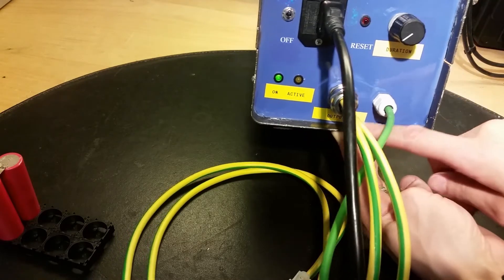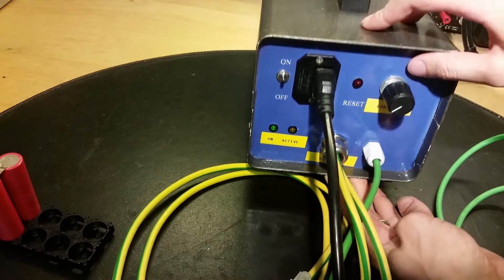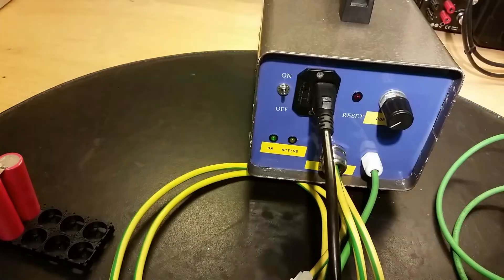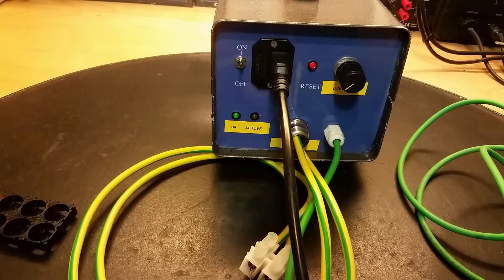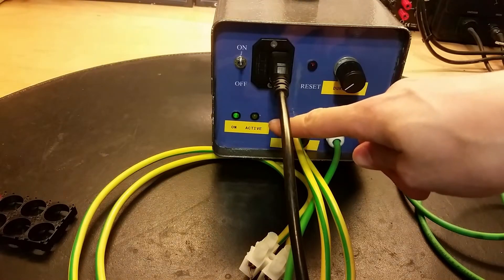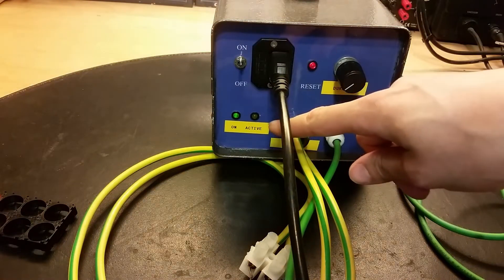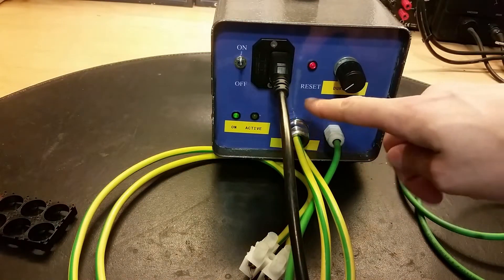LED here with the duration output on and active, and of course the on-off switch. So when I press the foot pedal, this active LED just turns on for the duration the transformer is turned on and then it jumps to the reset.